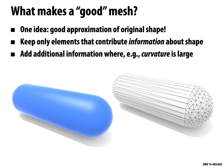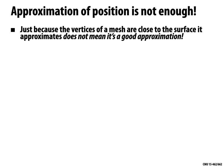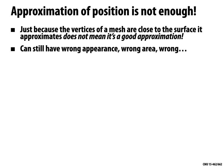However, approximation of positions is not enough. Just because the vertices of a mesh are close to the surface or exactly on the surface does not mean we have a good approximation. We can get the wrong appearance, wrong surface area, wrong normals, and wrong curvatures — we can get everything wrong about the geometry, even if the vertices are on the surface.